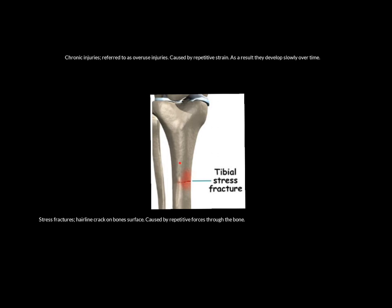Think about a fast bowler in cricket — someone running in at 25 miles an hour, jumping into the air, slamming that leg down onto the ground to start their bowling action. How many tens of thousands of times would they have done that in their career? The strain going through that tibia for 10,000 bowls eventually starts to cause cracks in the tibia — a classic example of a tibial stress fracture caused by repetitive strain.